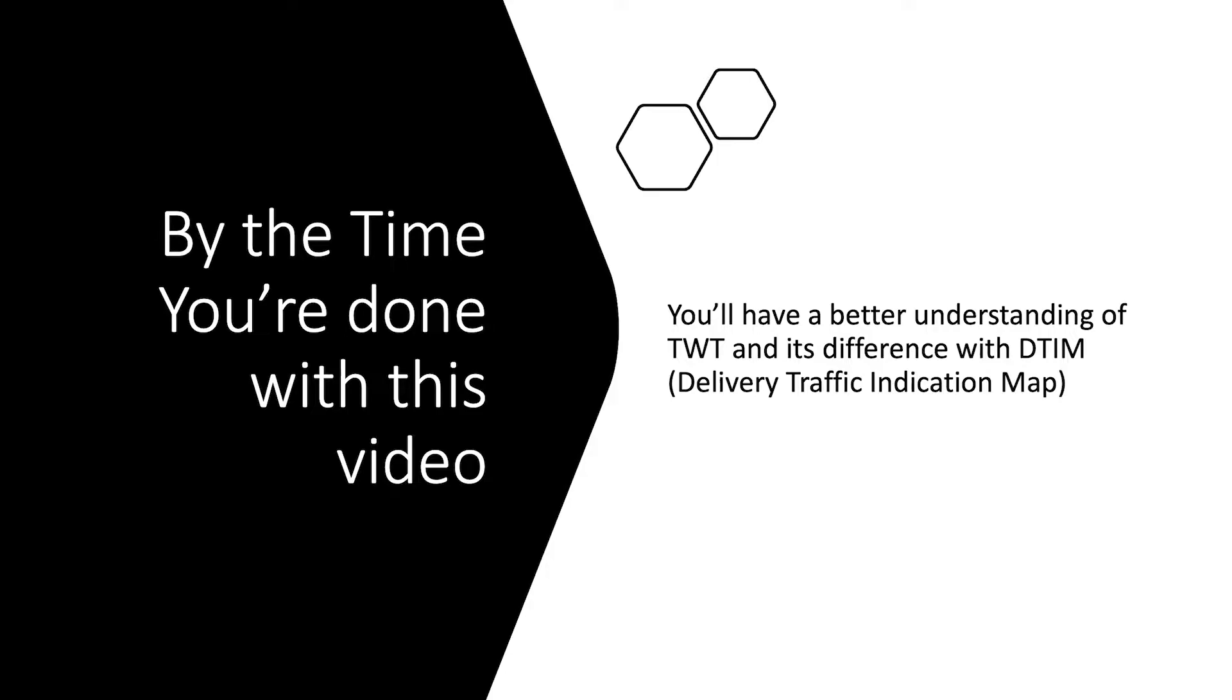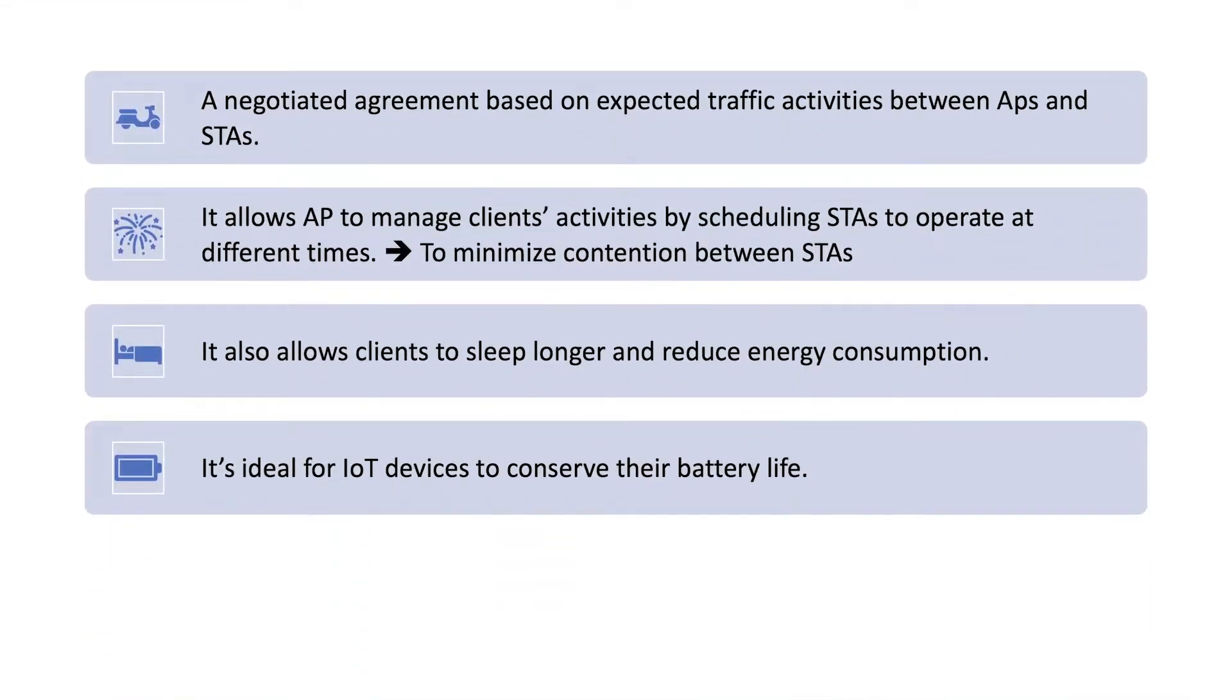I'm gonna explain them on the blackboard, but in general, it's a negotiated system between AP and a station based on the expected traffic. So AP controls the flow of the traffic and negotiates to the client stations in order to manage the flow. In this way, the contention will be decreased.